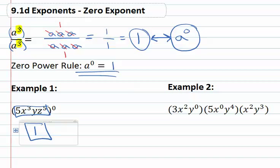In a more interesting example, three x squared, y to the zero, five x to the zero, y to the fourth, x squared, y cubed. Each of these pieces that are to the zero power, the y to the zero and the x to the zero, really reduce to just one.